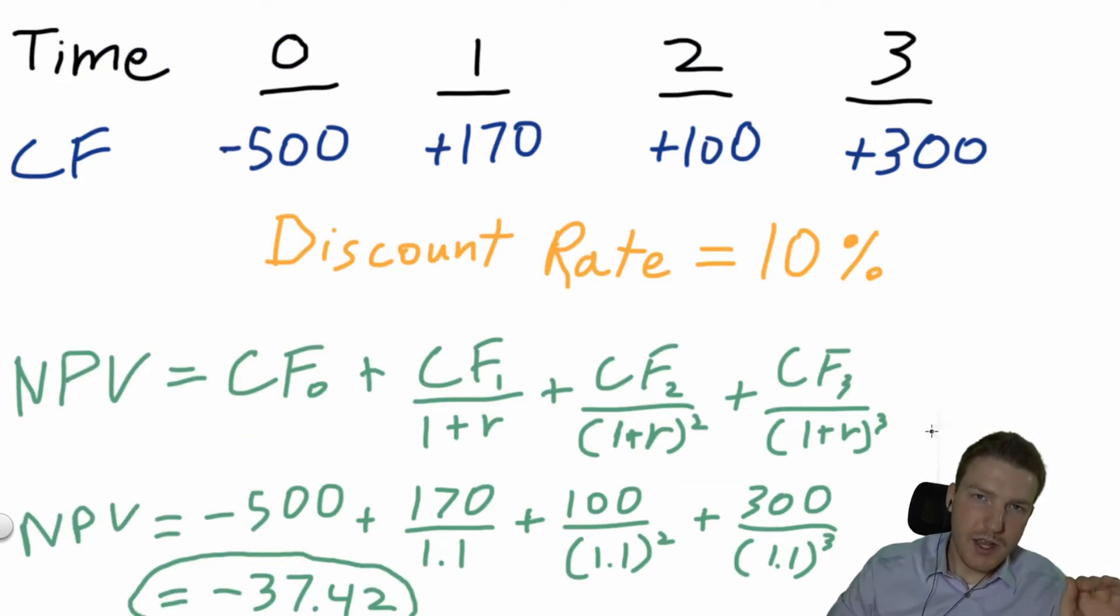Let's work one NPV problem, and then I'll show you how to do it on your calculator. Assume a real-world example: you're thinking about buying a rental property. You want to know whether this is going to be a profitable business endeavor. To buy this rental property, let's say it costs you $500 at time zero.